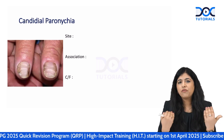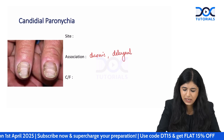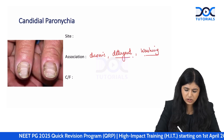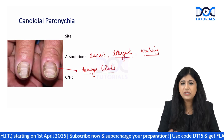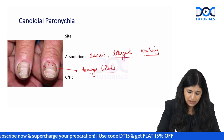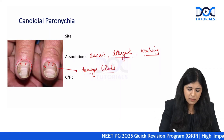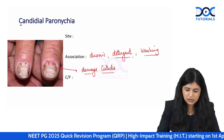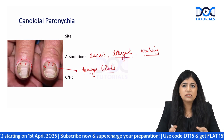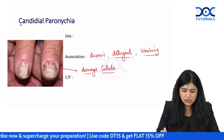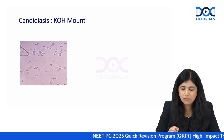Candidal paronychia is multifactorial in origin and is seen in patients with chronic detergent use and frequent hand washing, which damages the cuticle. Allergens, irritants, and fungus enter the nail fold, leading to swelling and redness of the nail folds. Remember: C for chronic, C for Candida — Candida causes chronic paronychia. It is more commonly seen in housewives and clothes washers.